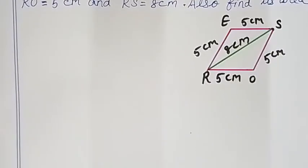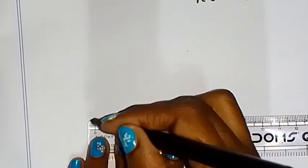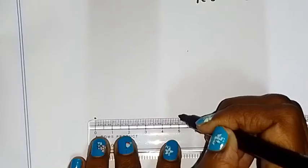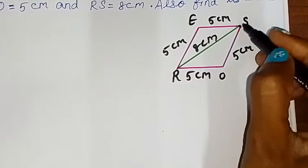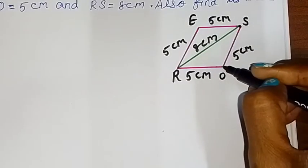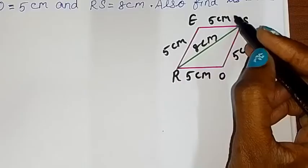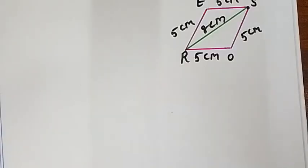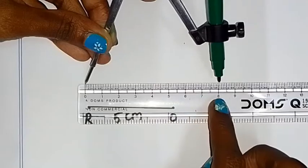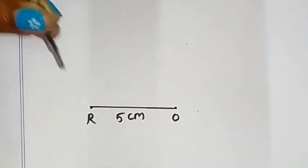First, draw the base RO of 5 cm. Mark the midpoint by joining R and O, then measure 2.5 cm to find the midpoint. Now we mark the S point. We have a side of 5 cm and a diagonal value of 8 cm. Take 8 cm measurement from R and cut the S point.